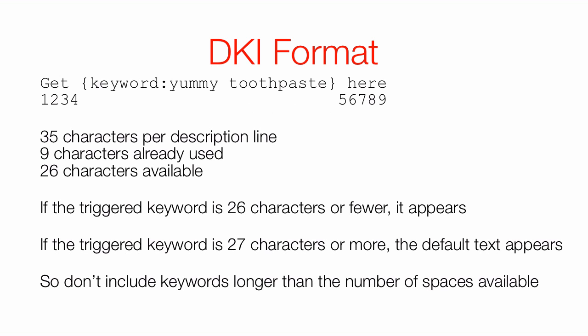Let me show you what I mean. Here's a description line: 'get {keyword:yummy toothpaste} here.' A description line has 35 characters available. Counting this out using a fixed-width font like Courier New, 'get ' is four characters, and ' here' is five characters, for a total of nine. So with 35 characters available and nine used, that means 26 characters are left for whatever the keyword is.